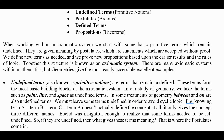Undefined terms, known as primitive notions, are terms that remain undefined — fairly self-explanatory. These terms form the most basic building blocks of an axiomatic system. In our study of geometry we take terms such as point, line, and space as undefined terms. In some treatments of geometry, between and on are also undefined terms.